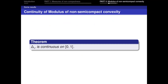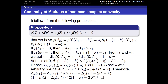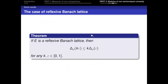We prove that the function Δ_ρ is continuous — this is an important result. In the proof we use an important proposition. As a special case for reflexive Banach lattices: if E is a reflexive Banach lattice, then Δ_ρ satisfies sub-homogeneity for any k and ε.